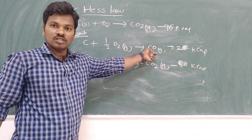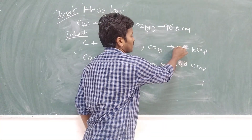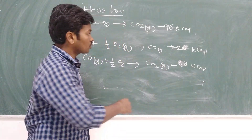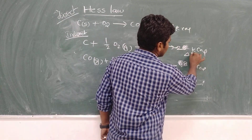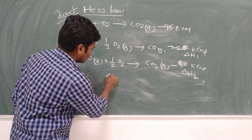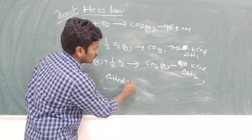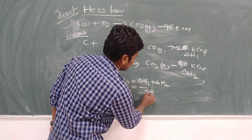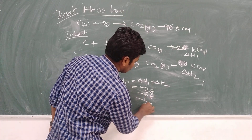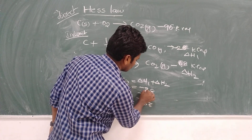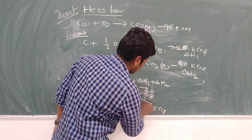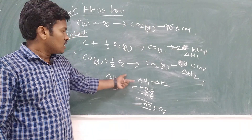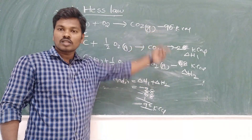In the first step, formation of CO gives minus 28 kilocalories. In the second step, formation of CO₂ from CO involves minus 68 kilocalories. For the indirect method: ΔH = ΔH1 + ΔH2 = minus 28 + minus 68 = minus 96 kilocalories. The sign differs but the numerical value is the same — 96 kilocalories in both methods.